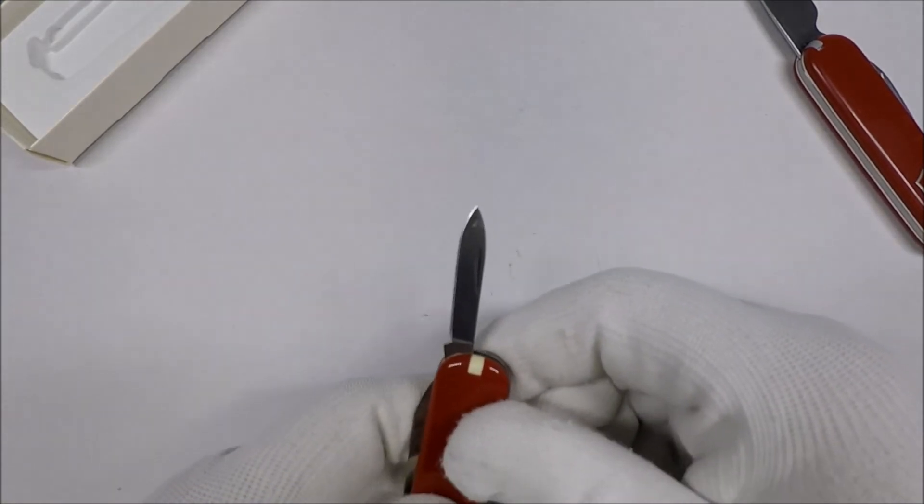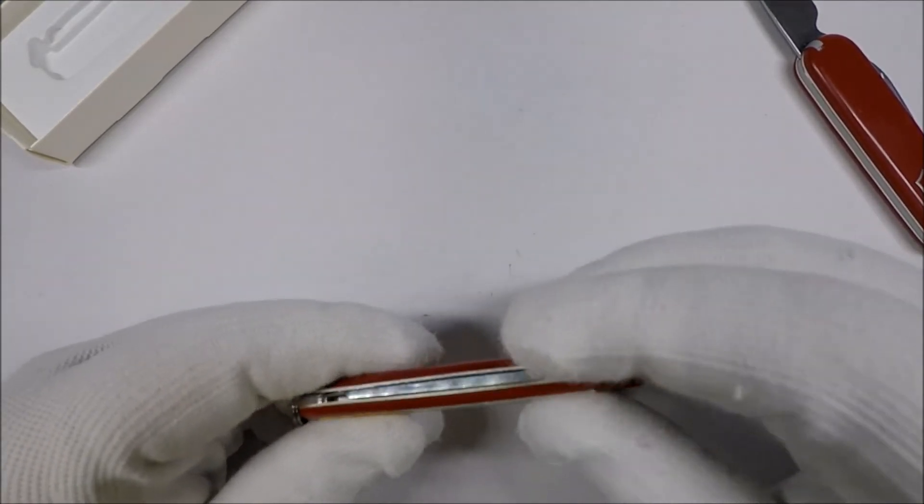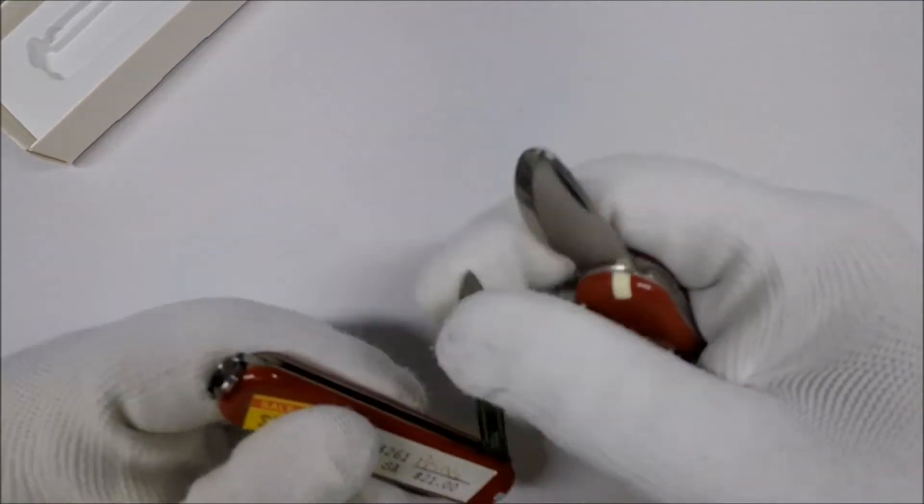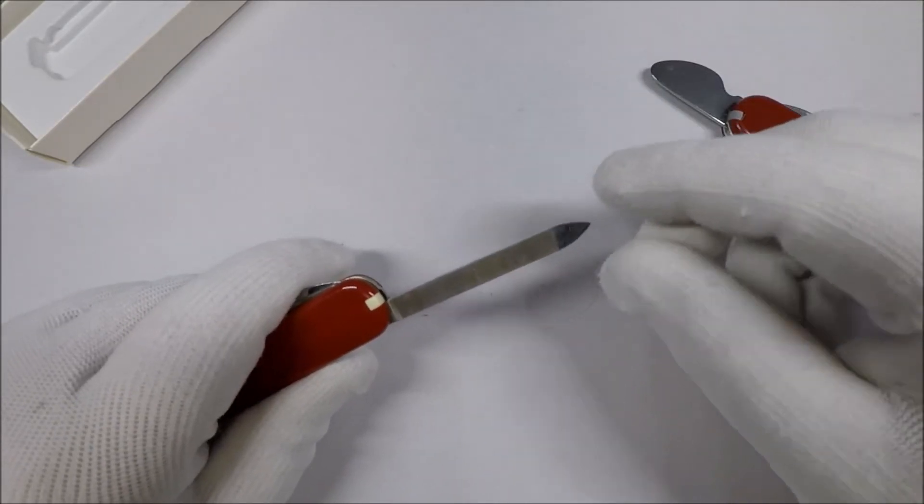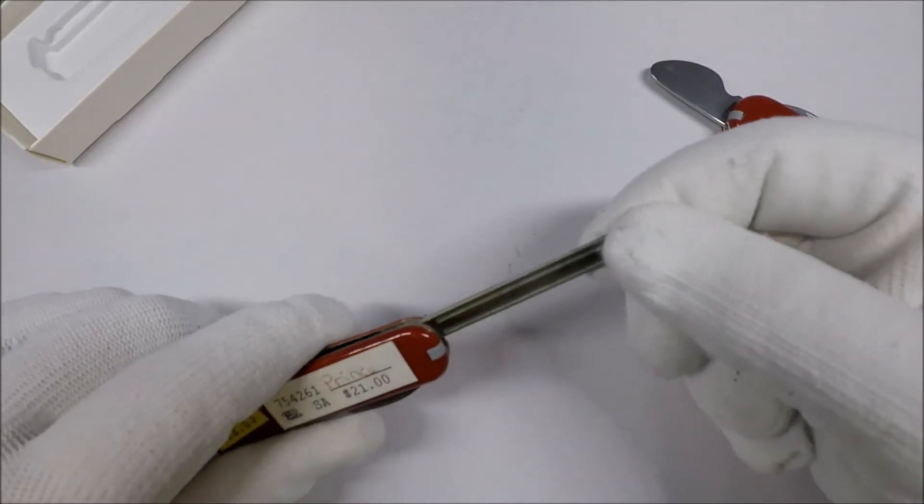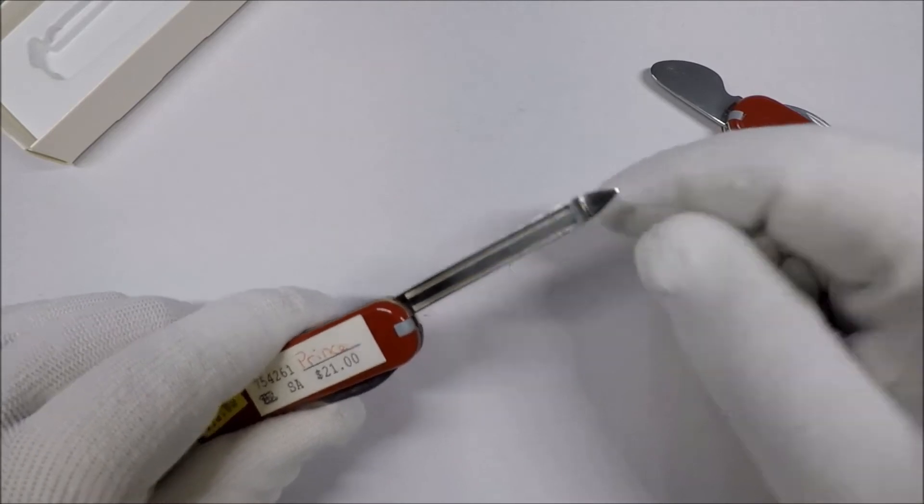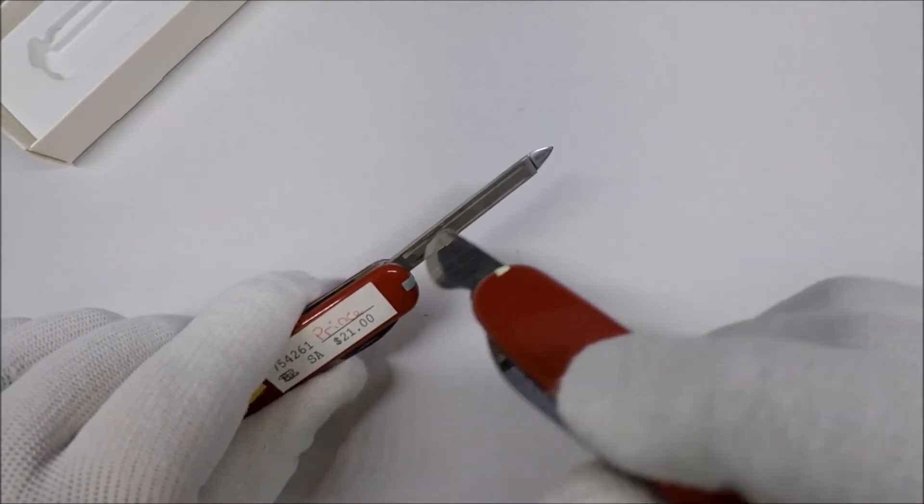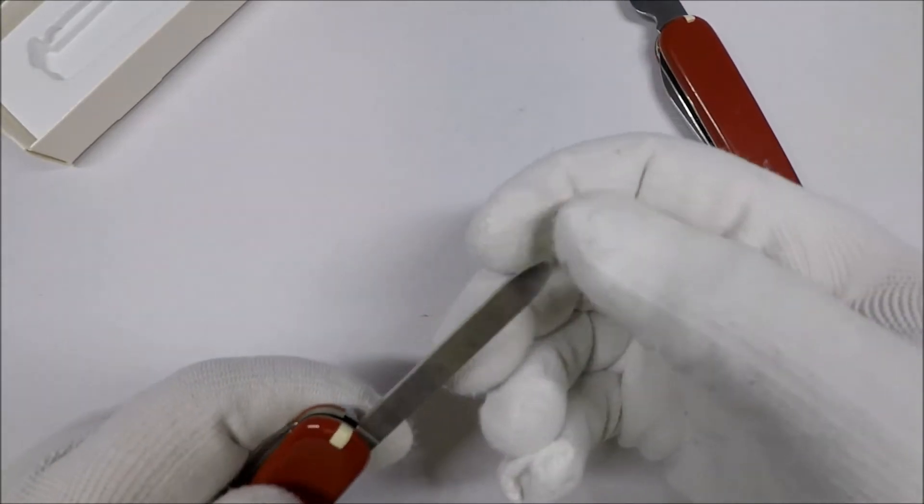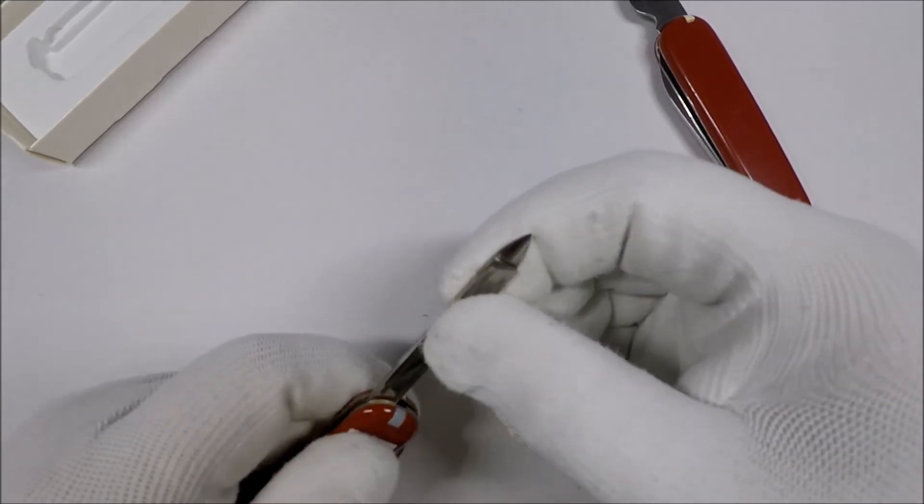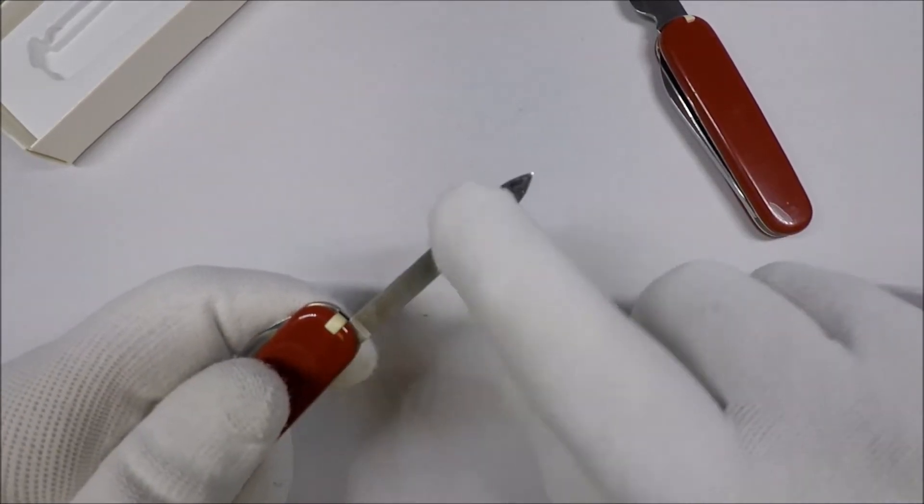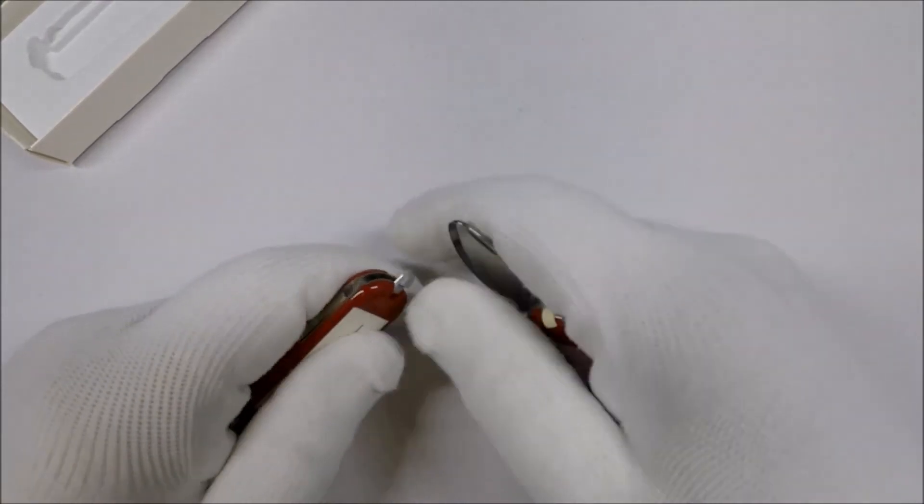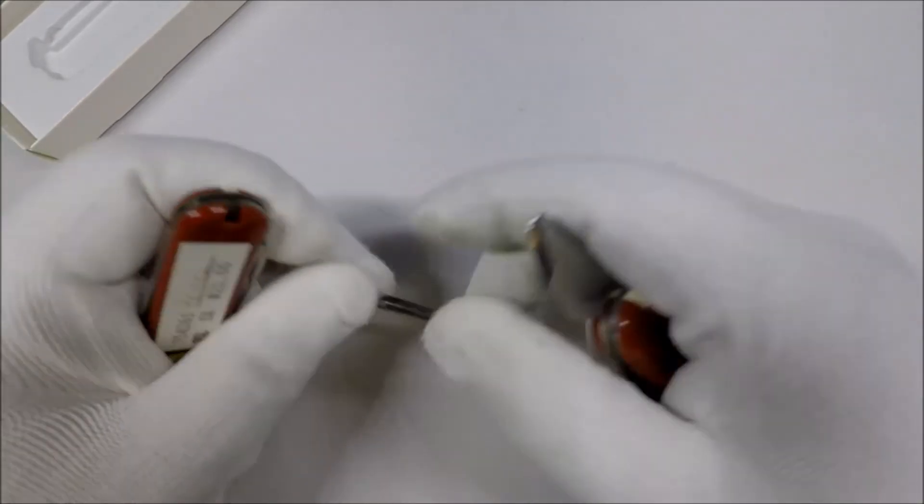On the flip side we've got this nail file thing. You can use this to tidy up your nails, and then you have a nail file in the back. That's kind of interesting. And then you've got the toothpick and the tweezers.